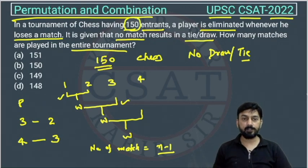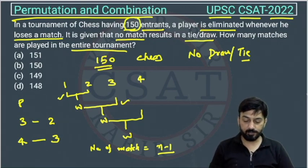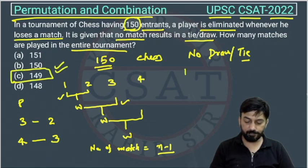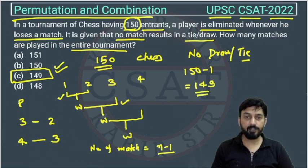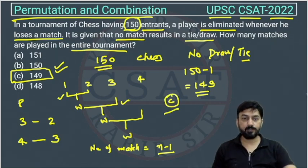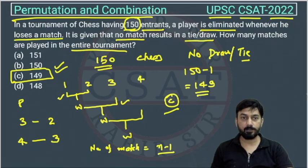In the given question there are 150 entrants, so the matches will be 150 minus 1, which is 149. So the total matches are 149 and the answer is option C. This is a very easy question — you just need to know the concept.